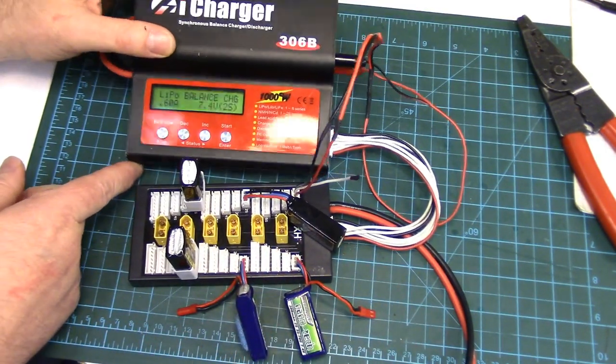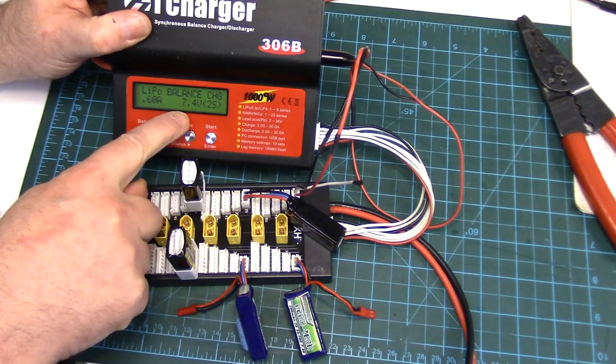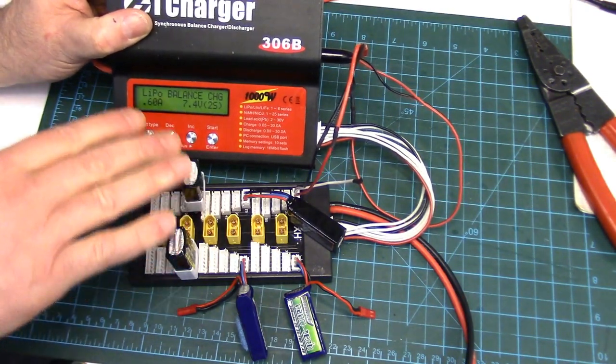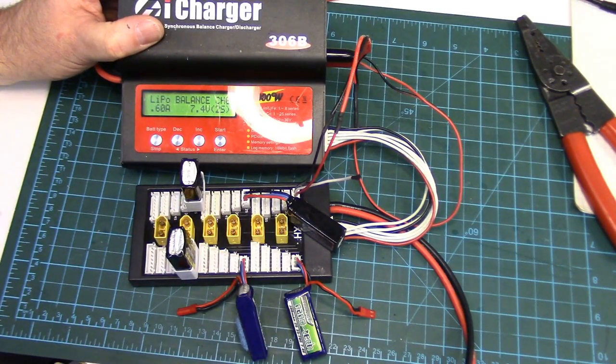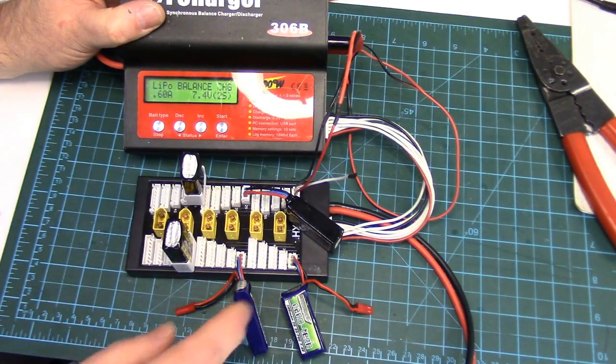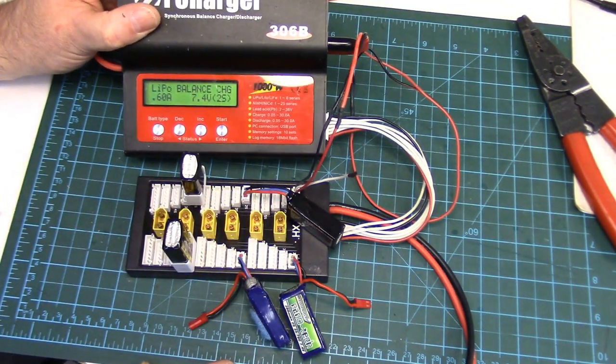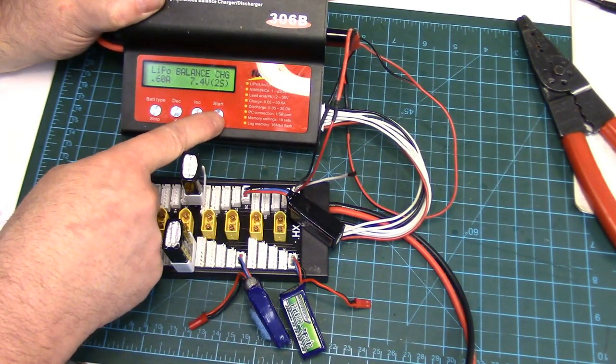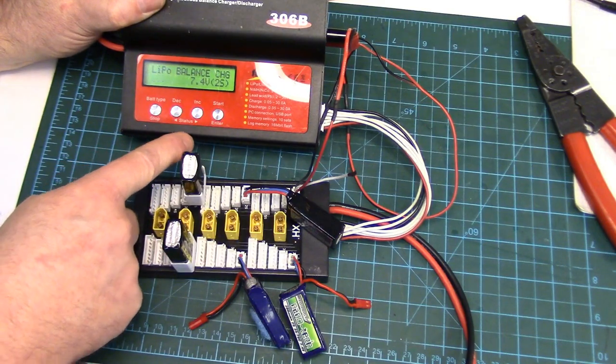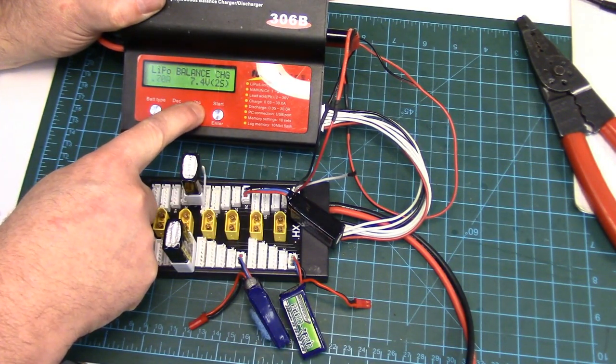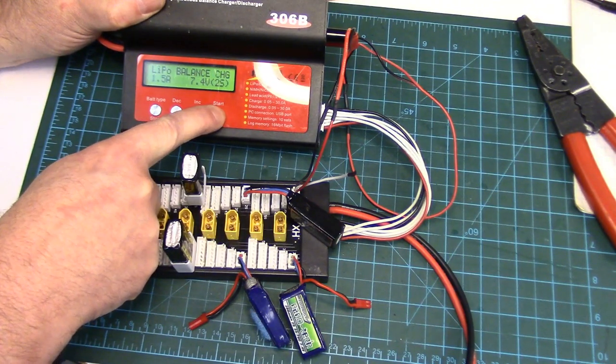And I don't know if you noticed, but as soon as we plug those in, it automatically has selected 2S, 7.4 volt nominal. So the charger is reading both cells and all the packs. And the charge rate on these 300 milliamp hours times 5 packs, 1500 milliamp charge rate. So 1.5 charge rate if we're charging at 1C. So we will dial this up to 1.5 amps and start the charge cycle.